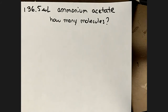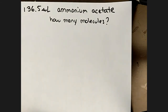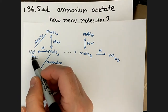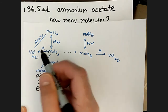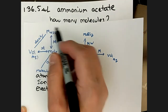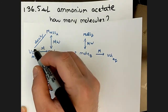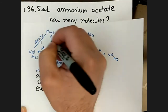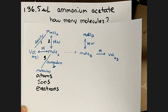Now let's look at the more challenging problem. We have 136 microliters of ammonium acetate — how many molecules is that? Since we're starting from a volume and we don't have molarity (often not yet covered in early chapters), we're going to need the density. So we need the density, the molecular weight, and Avogadro's number — at least three steps to get to our answer. Because it's also in microliters rather than a standard volume unit, there's some upfront unit conversion that has to be done as well.